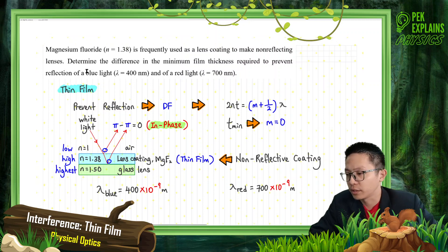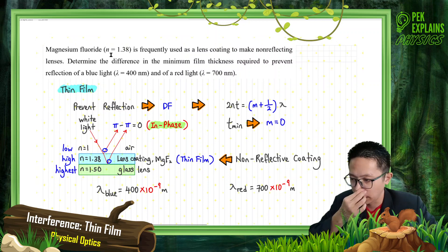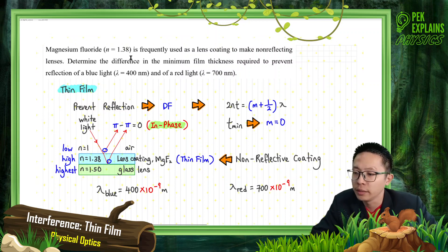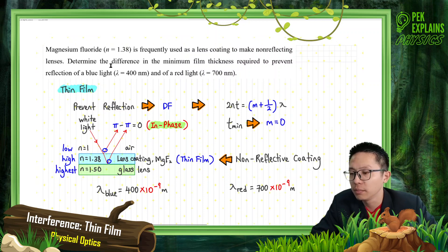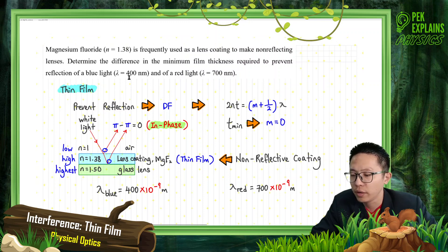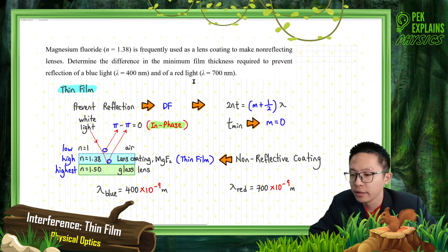Let us look at this question. Magnesium fluoride, N equal to 1.38 — this is the refractive index — is frequently used as a lens coating to make non-reflecting lenses. Determine the difference in the minimum film thickness required to prevent reflection of blue light with wavelength 400 nanometers and of red light, lambda equal to 700 nanometers.